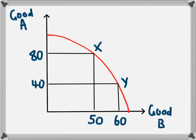For example, in this economy, to move from 50 to 60 of good B being produced, the cost is the opportunity which they are forgoing by doing this. And in this example, the opportunity cost of moving from X to Y is a reduction in the production of good A from 80 to 40.